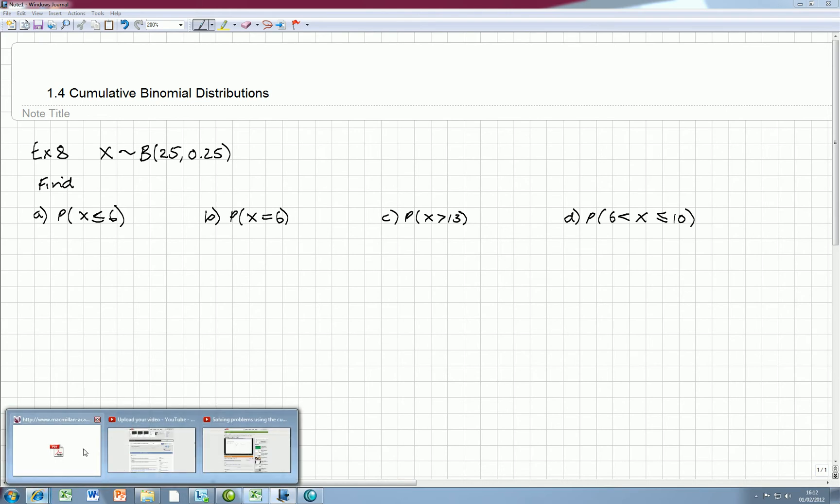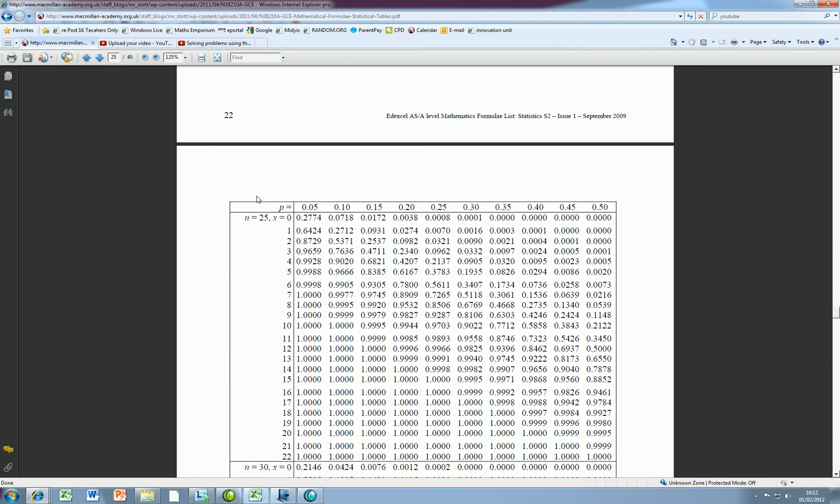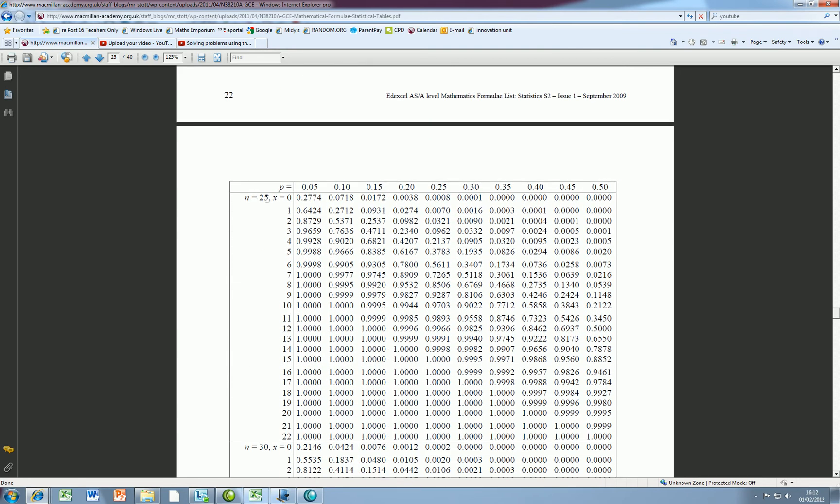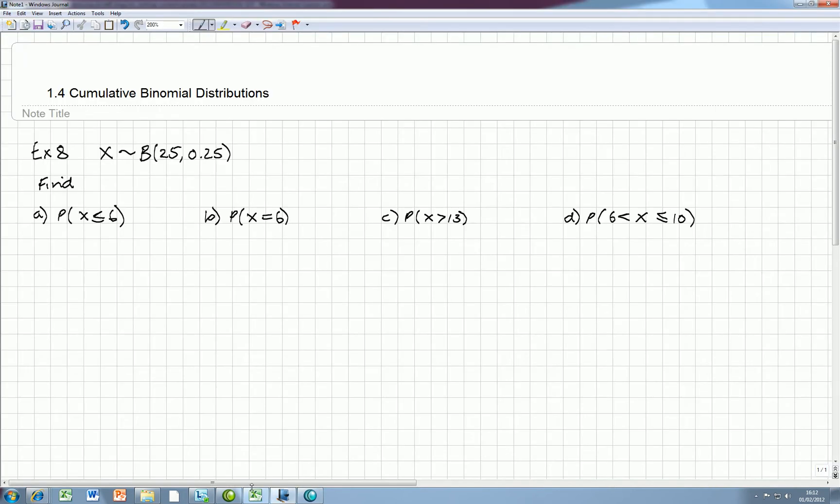So we're looking for 25 trials and a probability of 0.25. The probability of 0.25 puts us in this middle column here. We want x less than or equal to 6, so it's just a case of finding that number in the table, 0.5611.